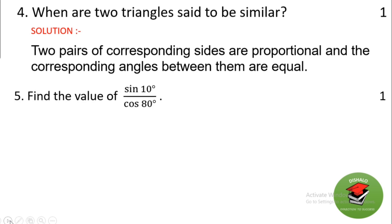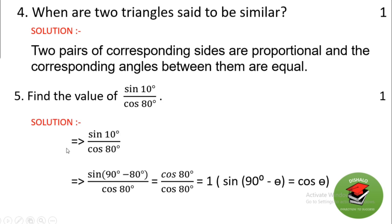Next: find the value of sin10° / cos80°. We can write sin10° as sin(90° − 80°). Since sin(90° − θ) = cosθ, sin(90° − 80°) = cos80°. So cos80° divided by cos80° cancels, giving us 1.